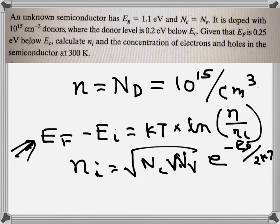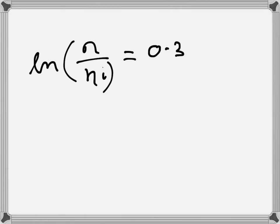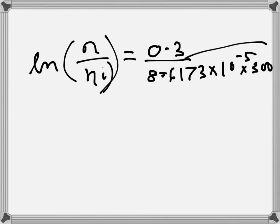We could have done that as well, but we will instead use this equation to find the value of NI. So if we do that, if we rewrite that one, it becomes ln N over NI, and then this is EF minus EI which is 0.3. Temperature is 300 Kelvin, so that will be...